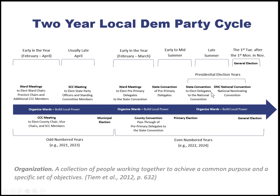In presidential years, there's also another state convention that happens after the primary election, where we elect delegates to the national convention — the Democratic National Convention. In midterm years, we don't have that; we simply go from the primary election to the general election in November. To summarize: odd-numbered years we elect our party leadership; even-numbered years we elect delegates to our conventions; and throughout this entire process we're organizing and building at the local level.